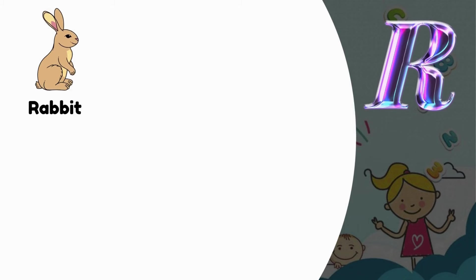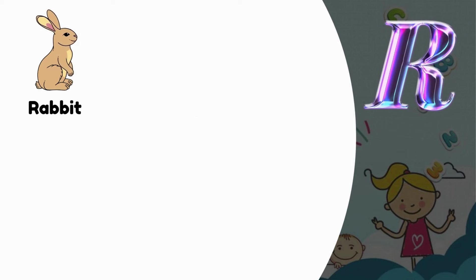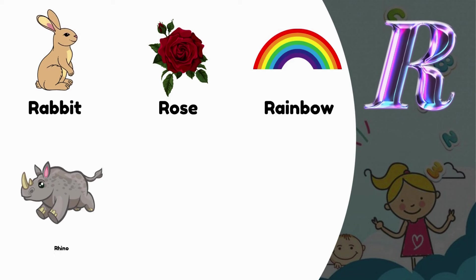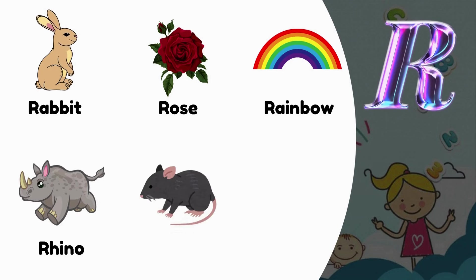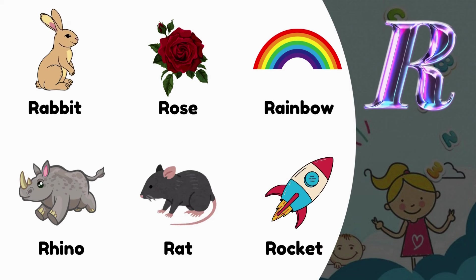R is for Rabbit. R is for Rose. R is for Rainbow. R is for Rhino. R is for Rat. R is for Rocket.